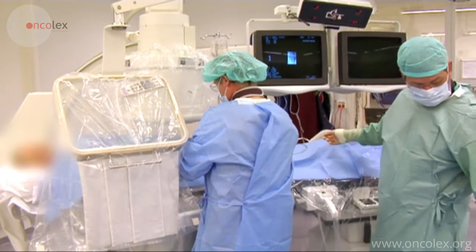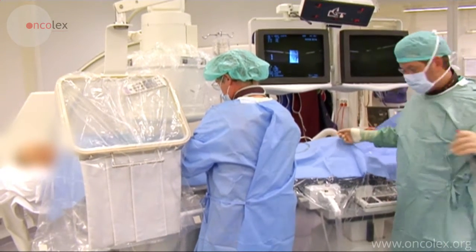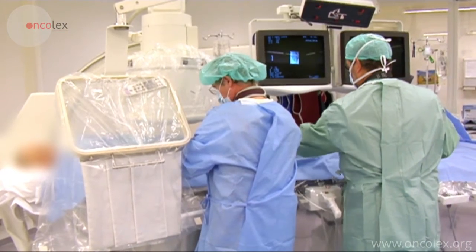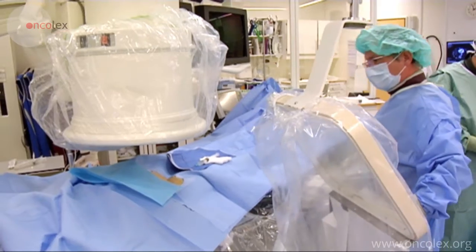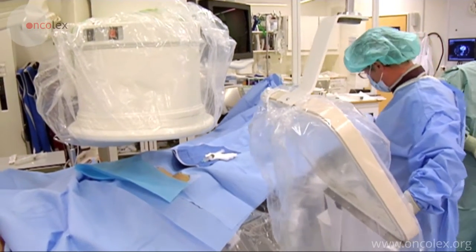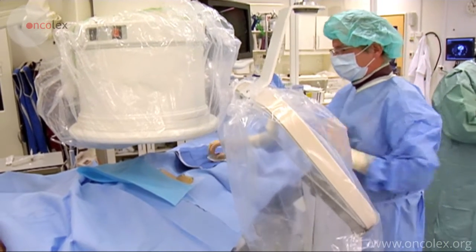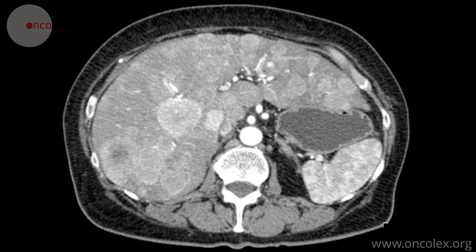This is a video of an arterial embolization of the right lobe of the liver. The patient has multiple liver metastases from a neuroendocrine tumor in the pancreas. The metastatic tumors are visible on a CT scan taken before the embolization.